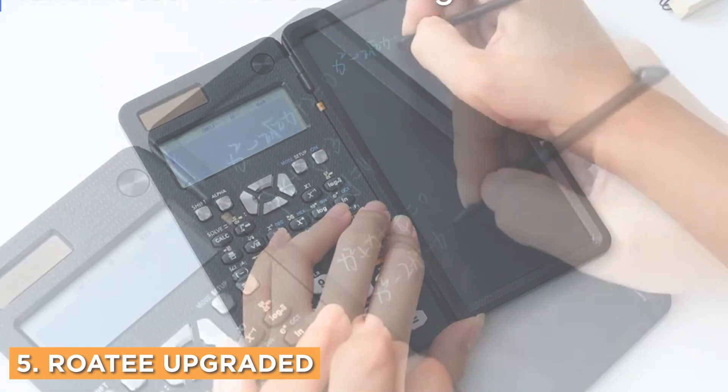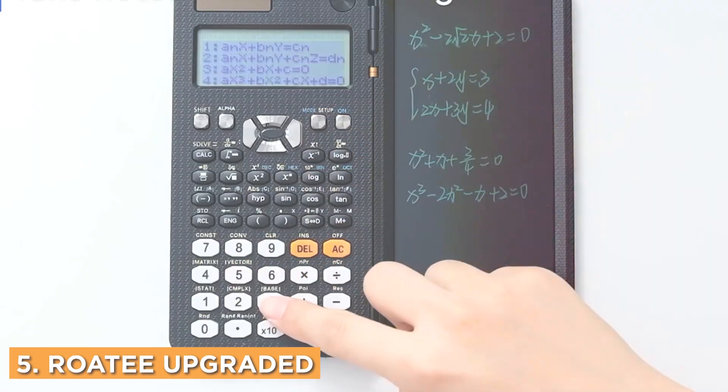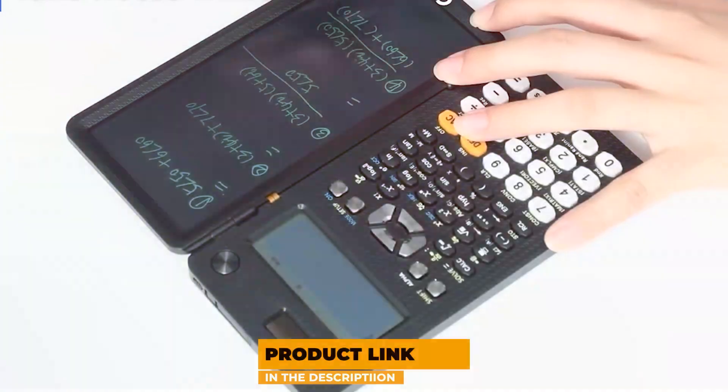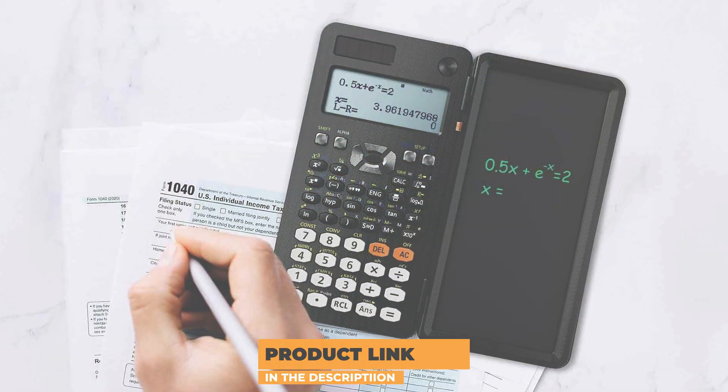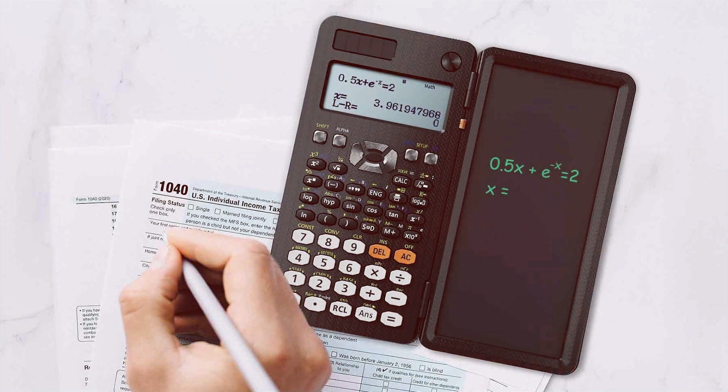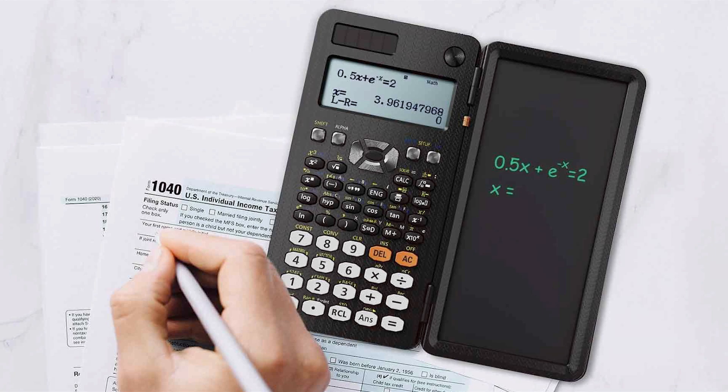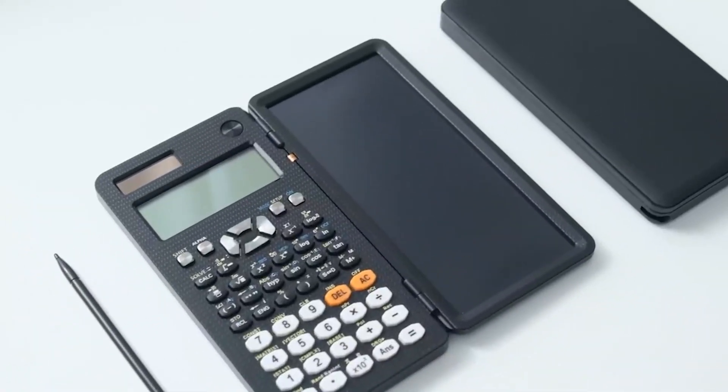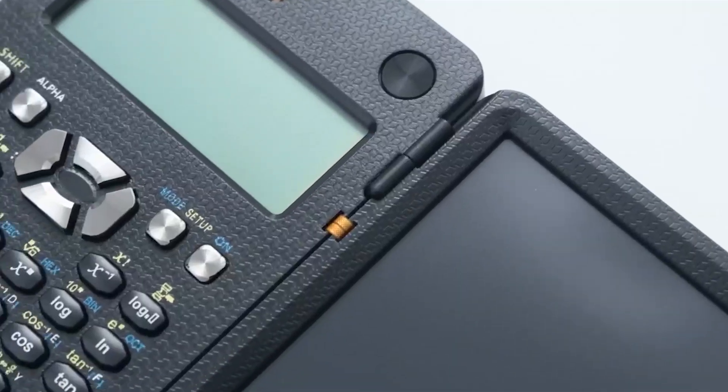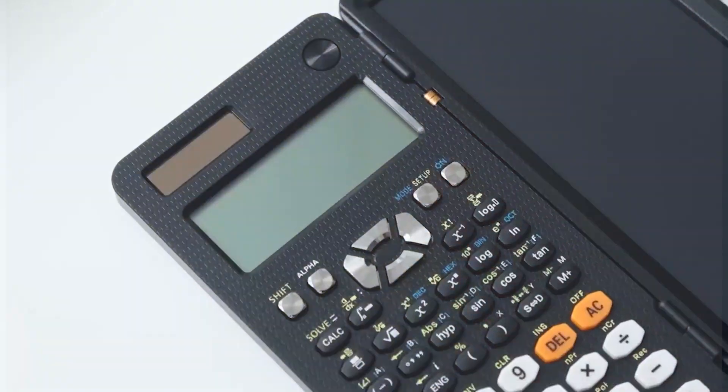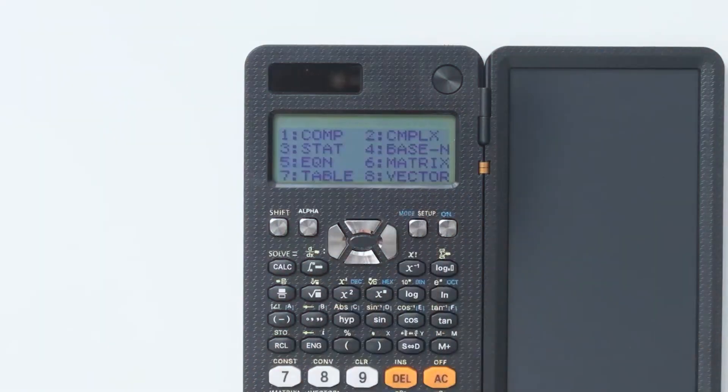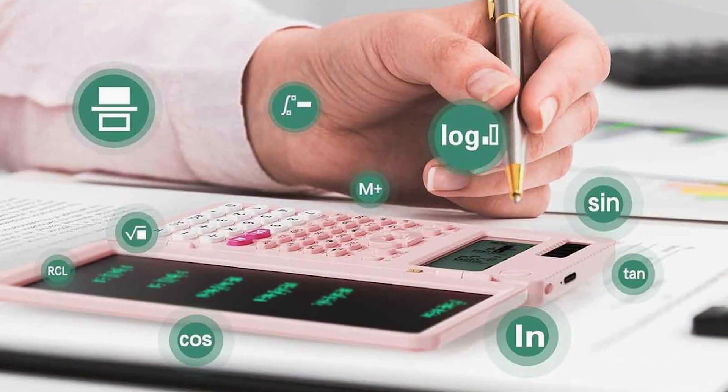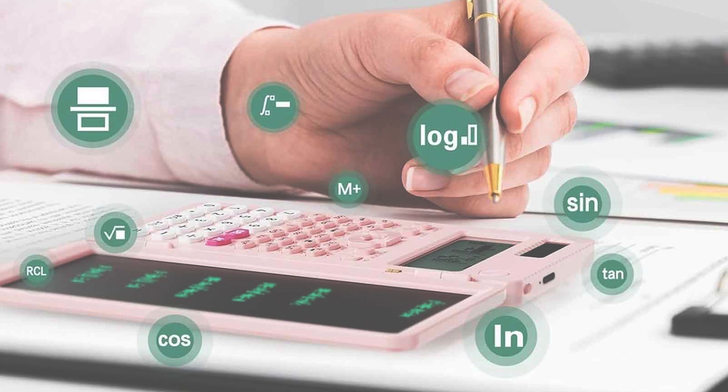Number 5: ROATE Upgraded 991ES Plus Scientific Calculator, which offers a unique notepad feature that sets it apart from traditional calculators. The design is sleek, with a spacious layout that provides ample room for easy navigation. The large LCD display is bright and clear, making it simple to read even in low-light conditions. The notepad feature allows users to jot down quick notes or important calculations, making this calculator incredibly versatile for students and professionals alike.